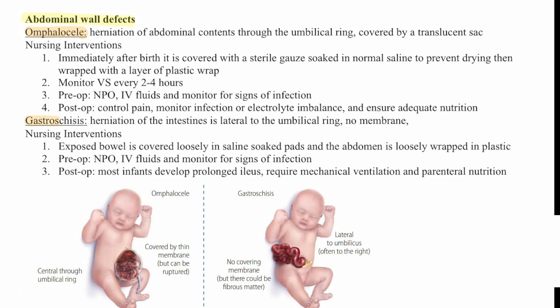Then we have gastroschisis, which is a herniation of the intestines lateral to the umbilical ring with no membrane covering. The exposed bowel is covered loosely in a saline-soaked pad and the abdomen is loosely wrapped in plastic. Pre-op: NPO, IV fluids, and monitor for signs of infection. Post-op, most infants develop prolonged ileus and require mechanical ventilation and parenteral nutrition.